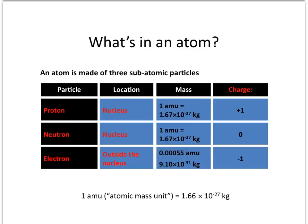The third particle is the electron, and that is located outside of the nucleus — you could say it's found in the electron cloud. Its mass is about 2,000 times smaller than the mass of the proton and the neutron at 9.10 x 10⁻³¹ kg, and it has a charge of negative 1. When talking about the atom, we have to be thinking on the nano level. So to make them more relative to us, we use relative mass, equating 1.66 x 10⁻²⁷ kg as one atomic mass unit. That allows us to talk about the proton and the neutron as 1 amu in mass, and the electron as 0.00055 amu.